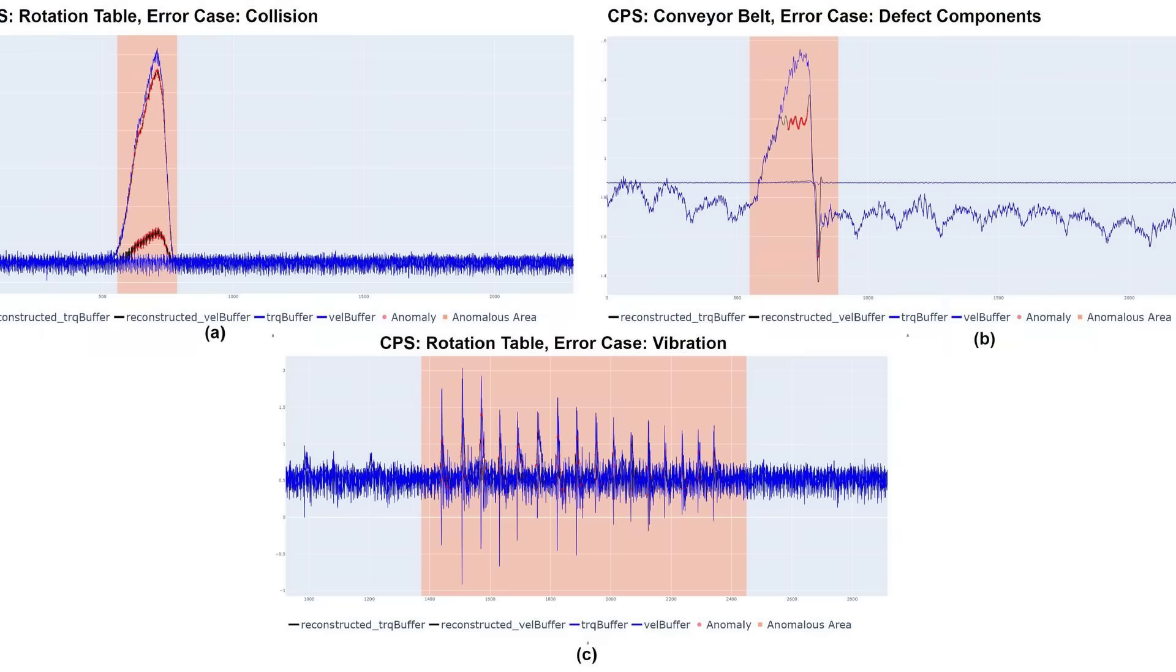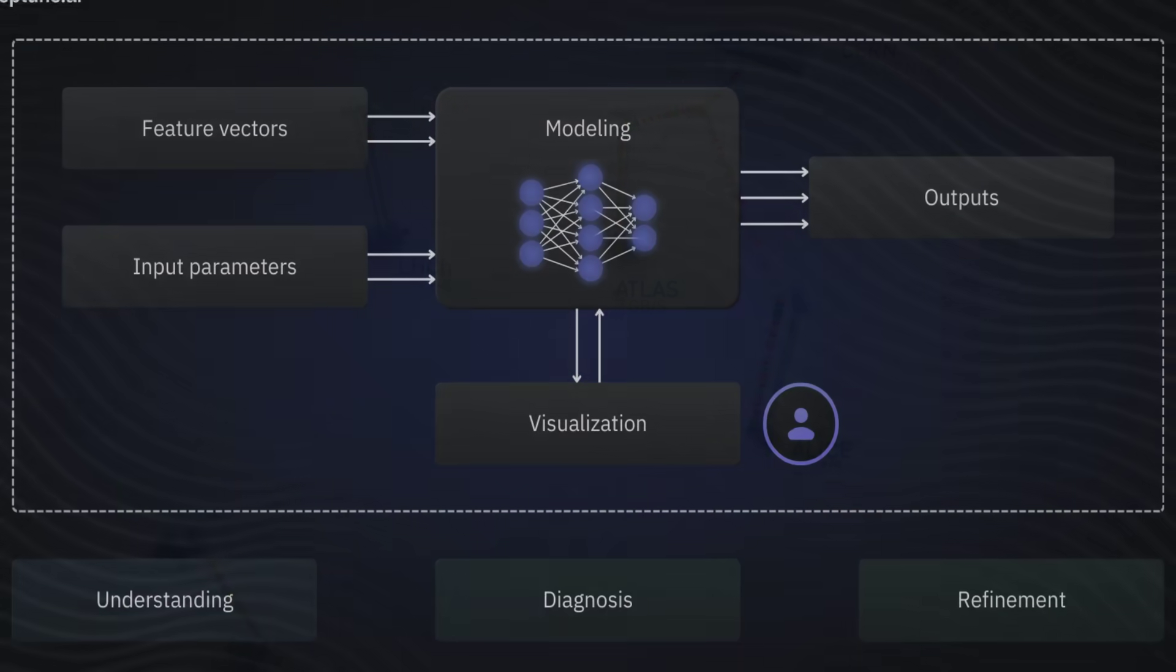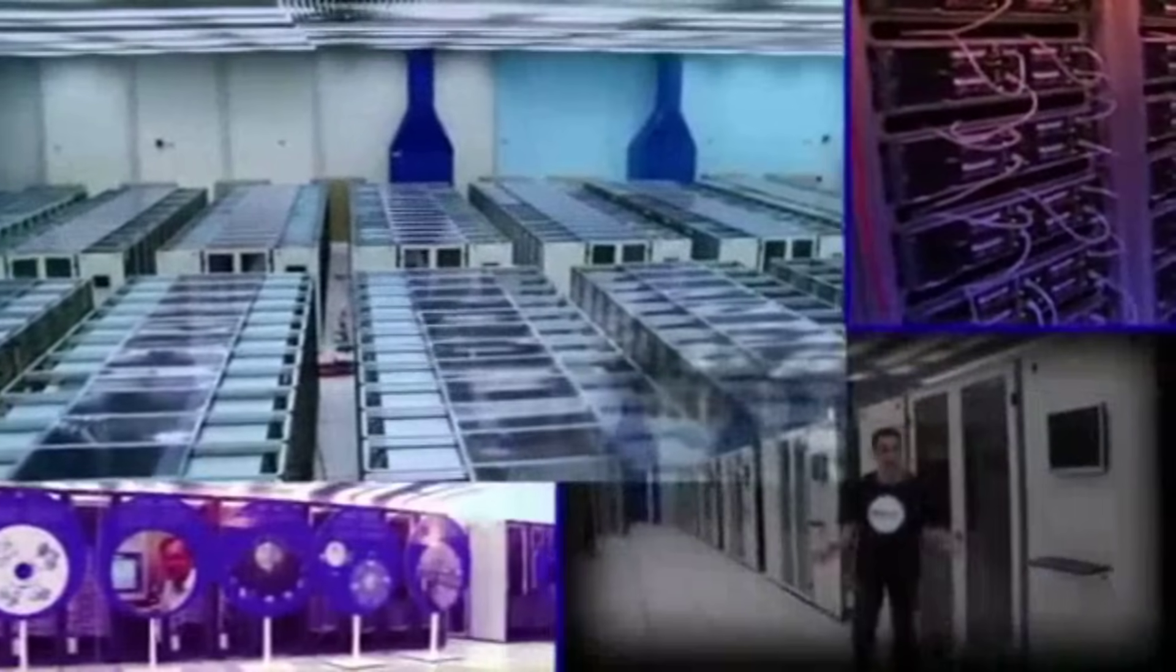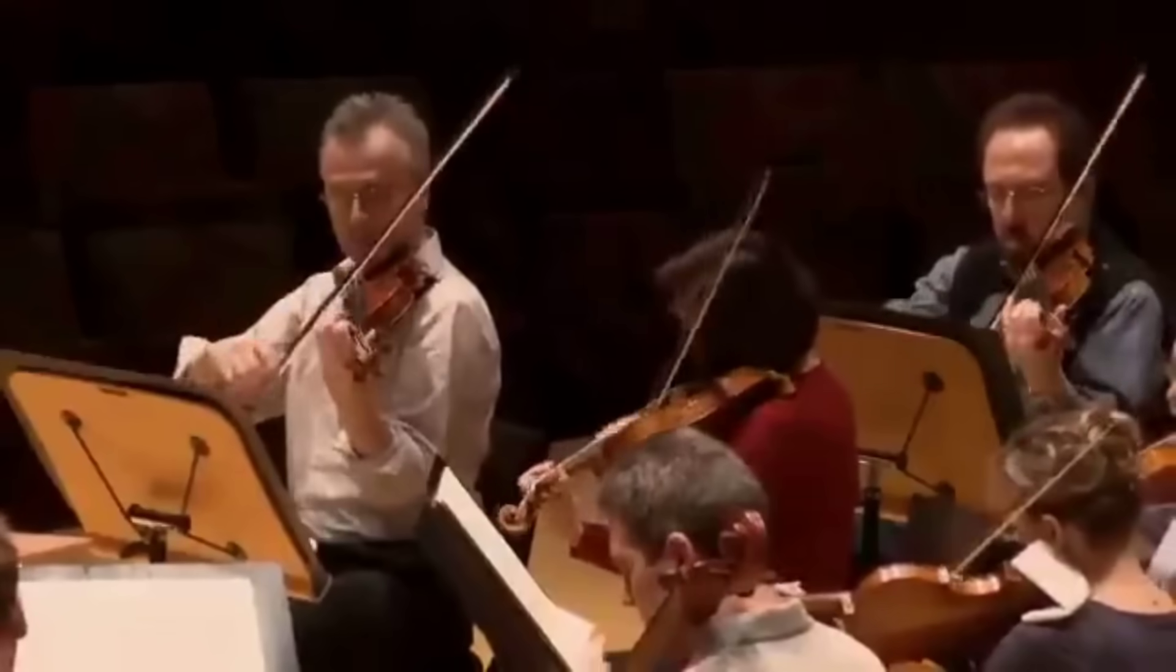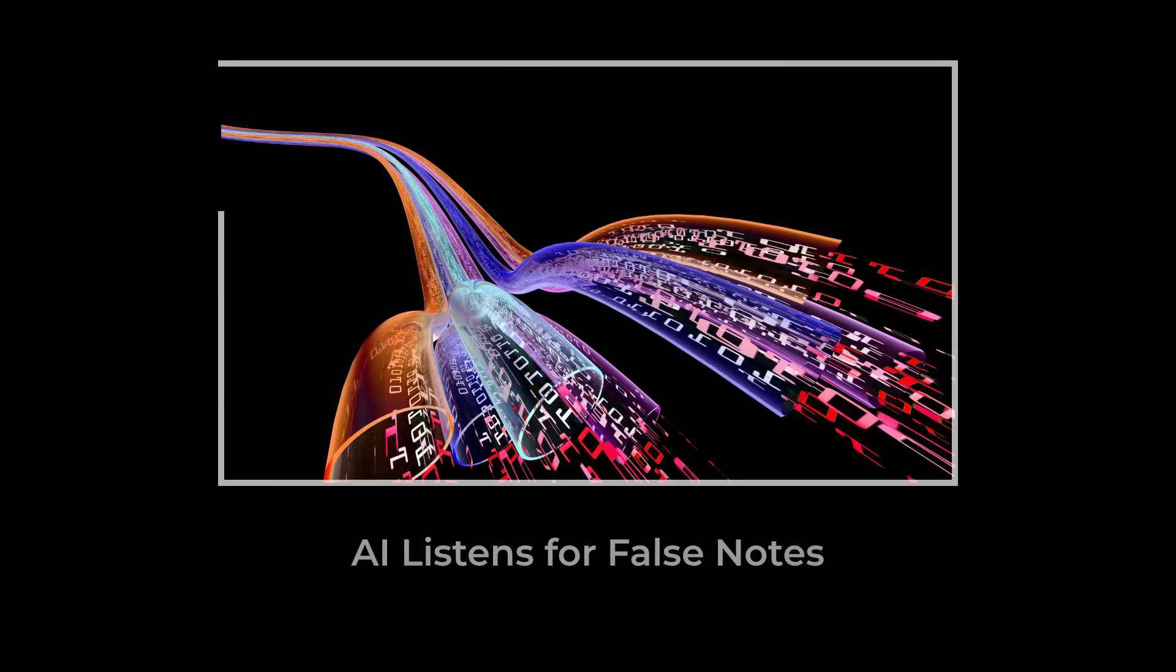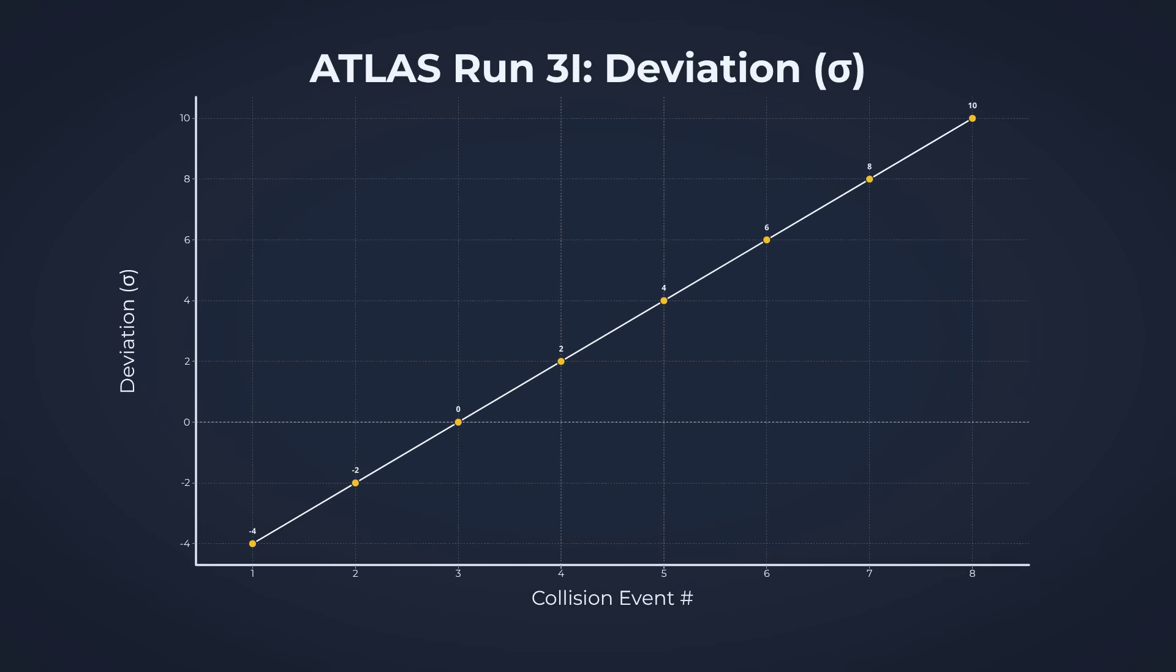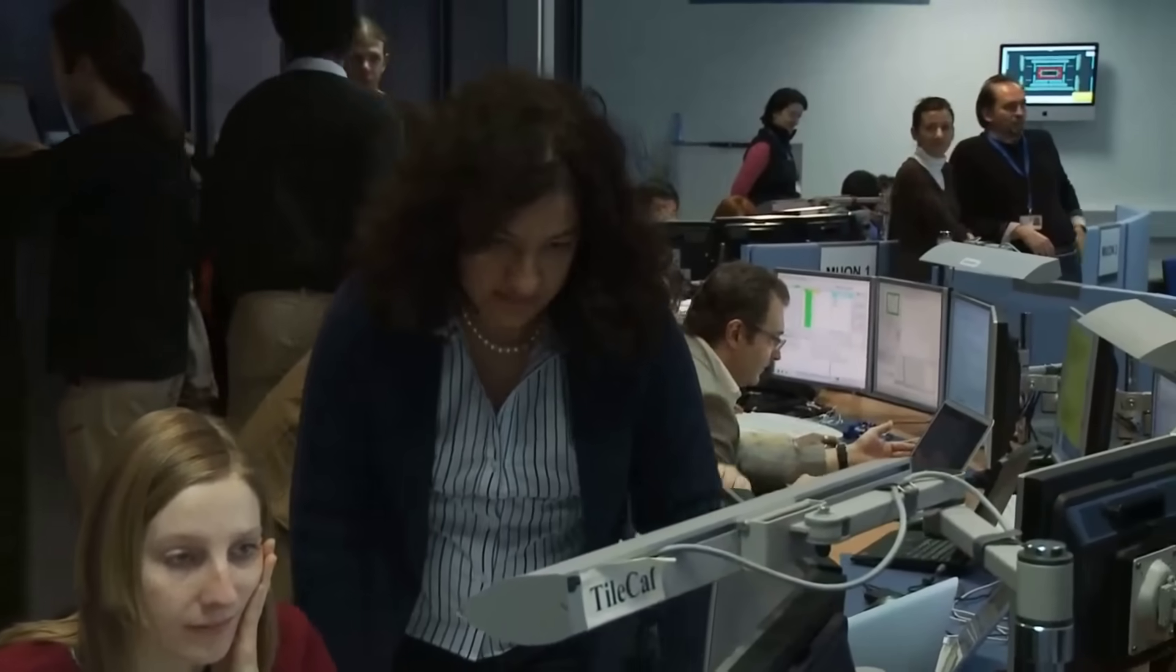ATLAS relies on unsupervised machine learning, a method where the system teaches itself what normal looks like. The AI scans billions of events, mapping out the expected patterns of known physics. It doesn't need a list of what to look for. It simply flags anything that doesn't fit. This process is like teaching a computer to recognize every note in a symphony, then asking it to point out a single wrong chord. The anomaly that triggered the 3i alert slipped past every traditional filter. Only the AI's anomaly detection system caught it, a spike in the data that matched nothing in the standard model, nothing in years of background noise. The algorithm assigned it a high anomaly score, a statistical red flag that demanded human attention.